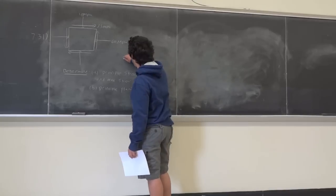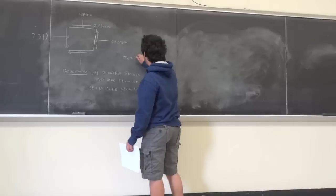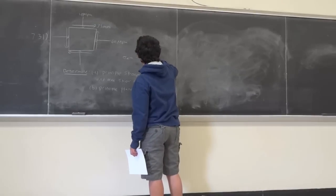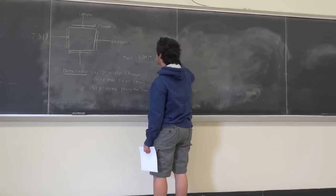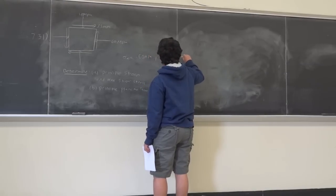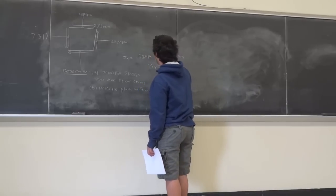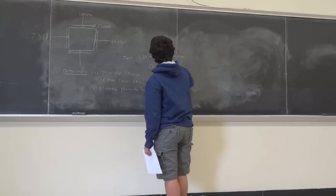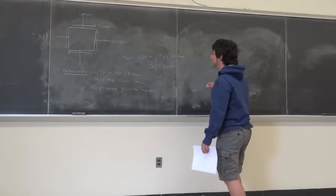So what's sigma x in this 2D state of stress? Sigma x is negative 60 MPa. What about sigma y? Negative 40 MPa. And tau xy? Positive 35 MPa. That's your state of stress.